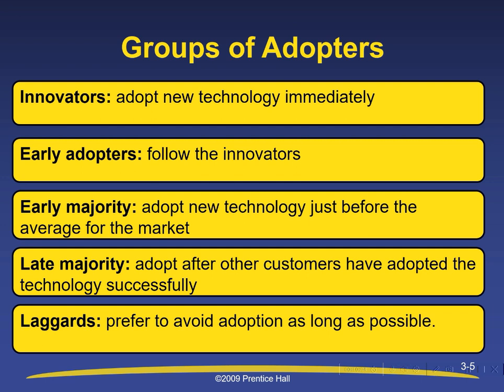Groups of Adopters: the first group are the innovators, who adopt new technologies immediately. The second group are the early adopters, who follow the innovators. The third group are the early majority, who adopt new technology just before the average for the market. The fourth group are the late majority, who adopt after other customers have successfully adopted the technology. Finally, there are the laggards, who prefer to avoid adoption as long as possible.